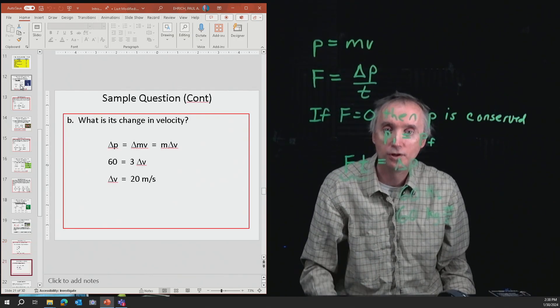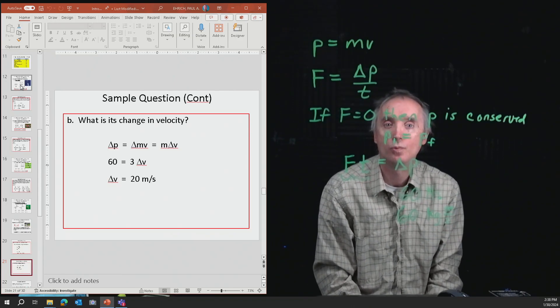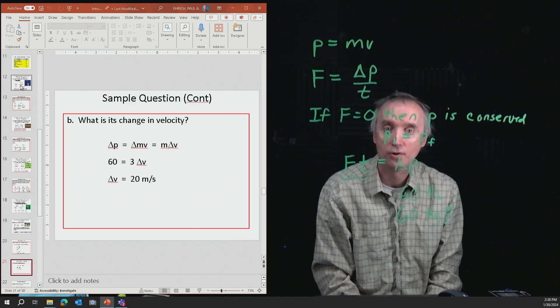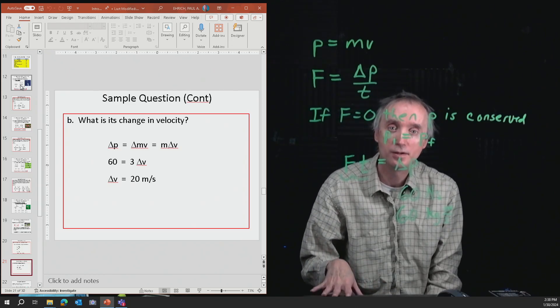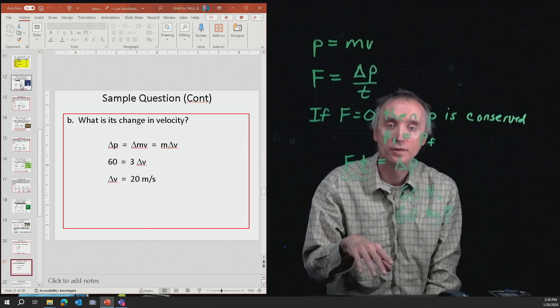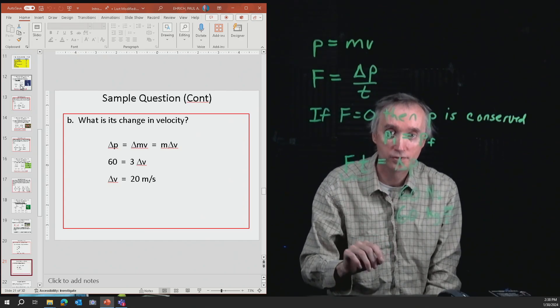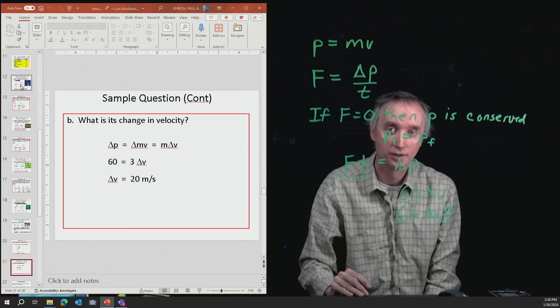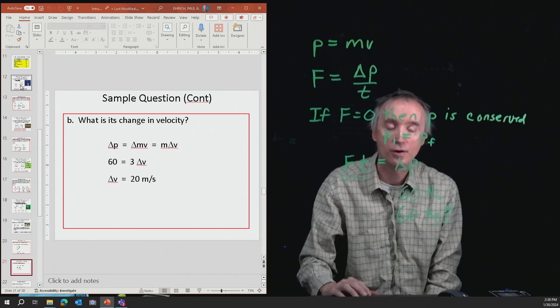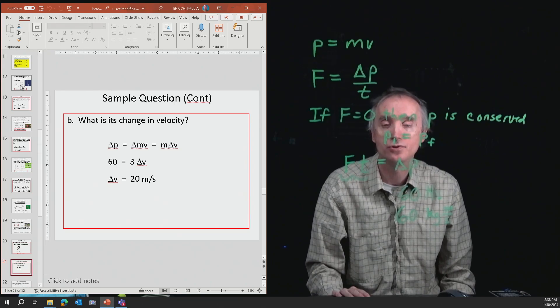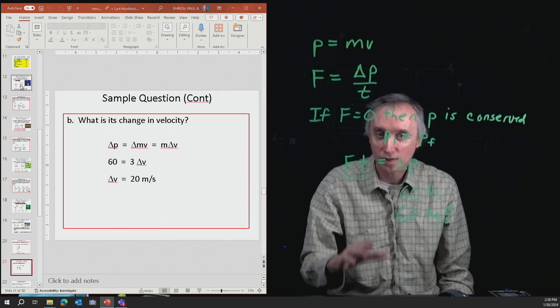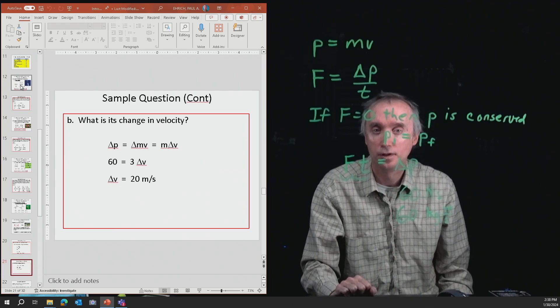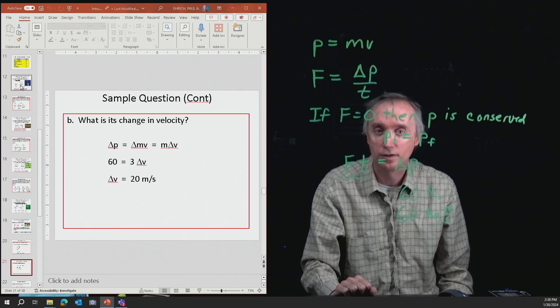When you go to part B, it asks what's the change in velocity. Momentum is MV. We know what the momentum was, and we know what M is. If we solve that, we can find the change in speed of the object. I think that's a fairly easy question that could be on the exam.